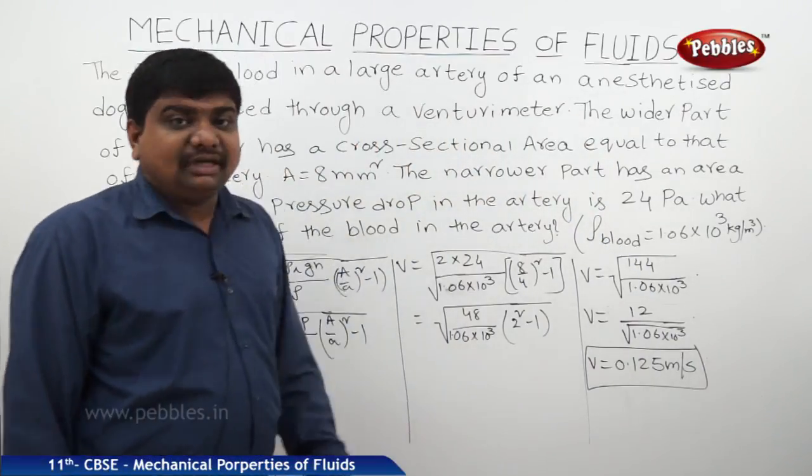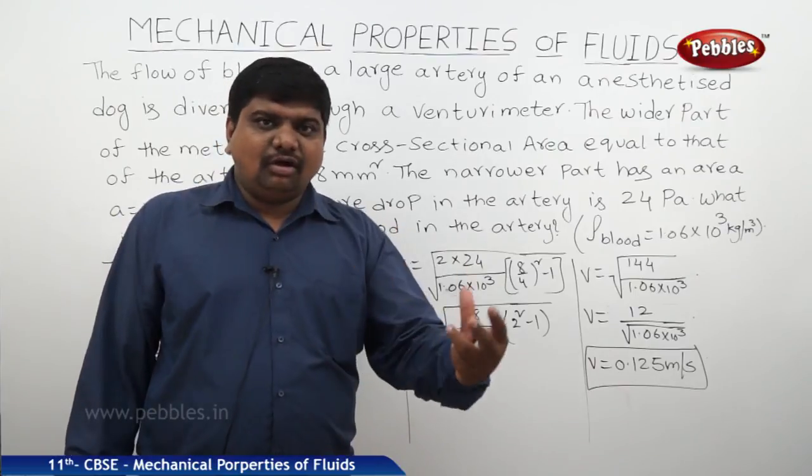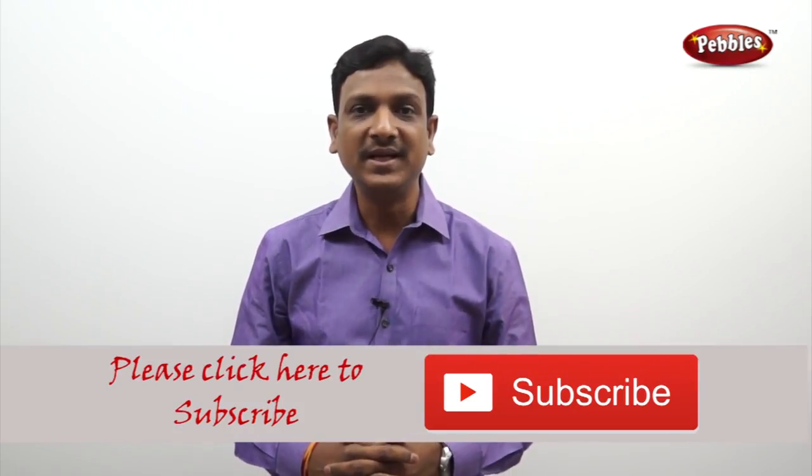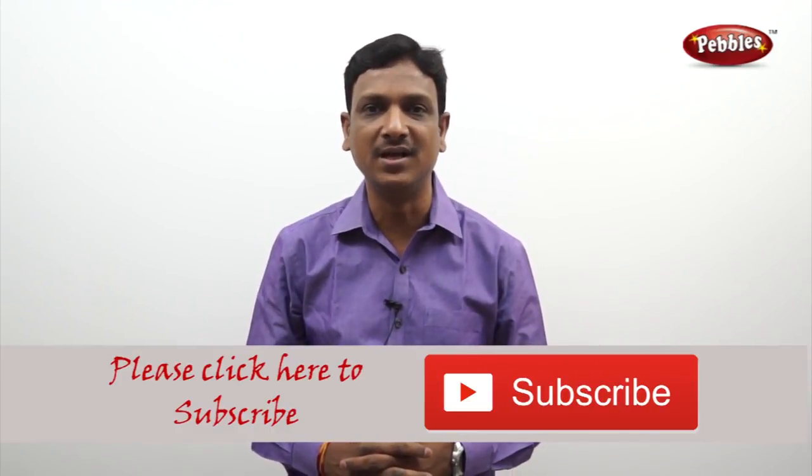So this is the velocity of the blood flowing through the anesthetized artery of the dog. If you like this video, please give a thumbs up. Please subscribe to our channel to get more videos on CBSE syllabus.